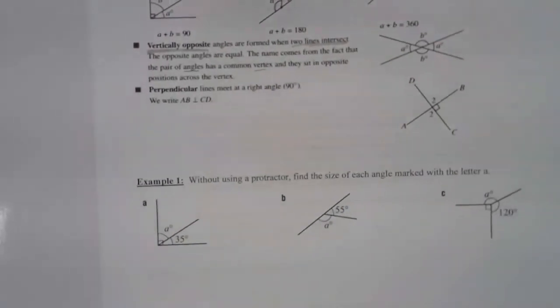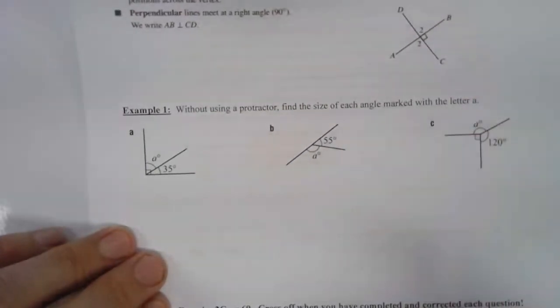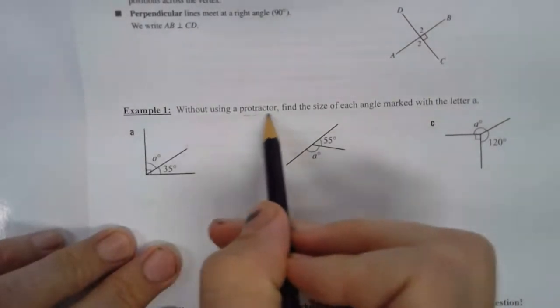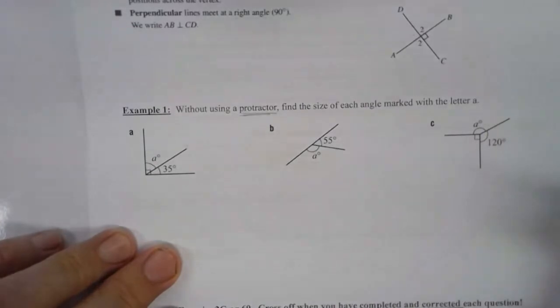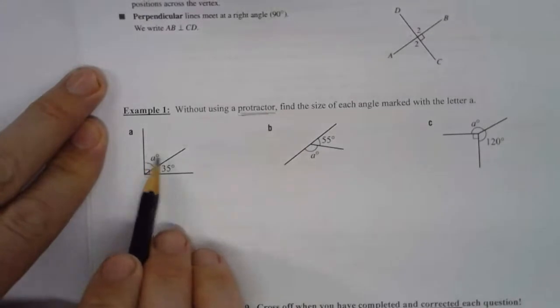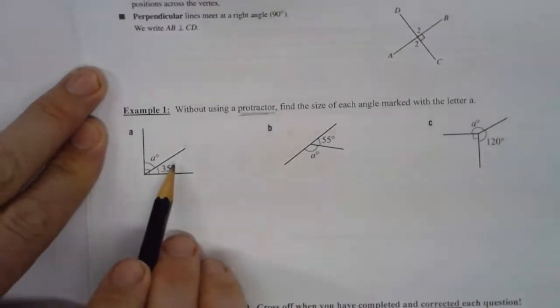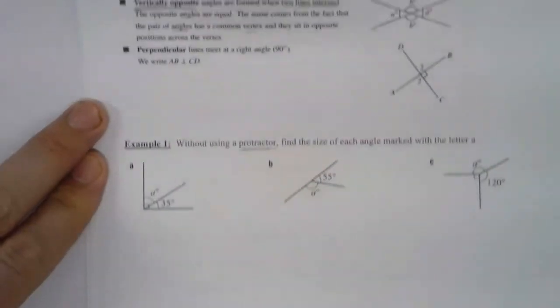Now let's do an example. So here, it does say without using a protractor, because we're not doing that this time, find the size of each angle marked with the letter A. Now I just need to remember what the rules are. For this first one, I've got two adjacent angles next to each other, and it looks like I've got 90 degrees. So just going back and checking, this is complementary adjacent next to each other.